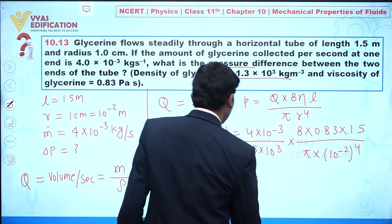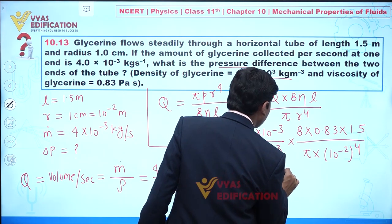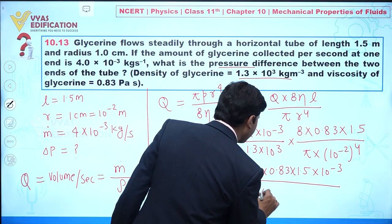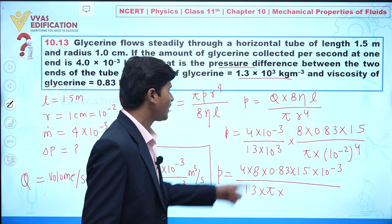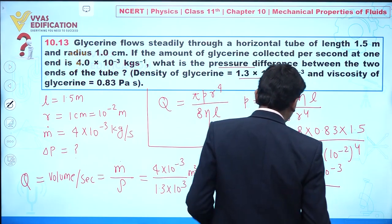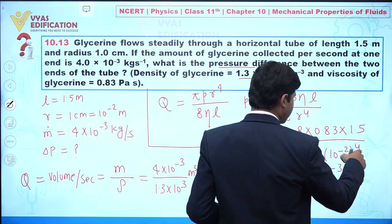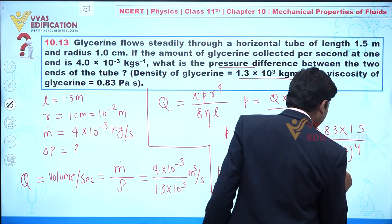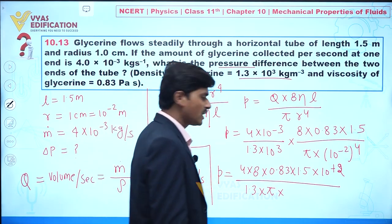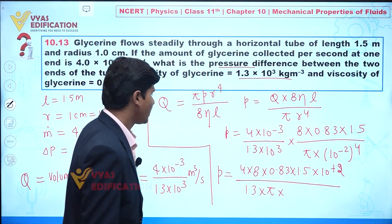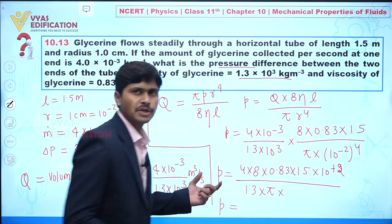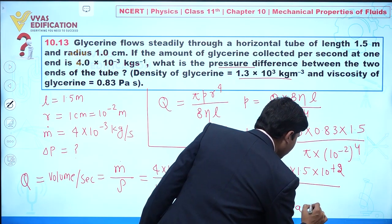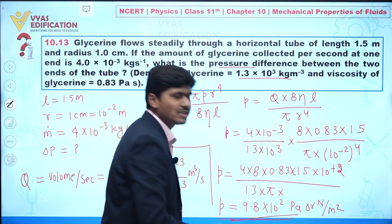Now we simplify to calculate the pressure difference. The numerator becomes 4 times 8 times 0.13 times 1.5 times 10 to the power minus 3. The denominator is 1.3 times pi times 10 to the power minus 8. This gives 10 to the power minus 5 in the denominator, and after simplification we get 10 to the power plus 2.